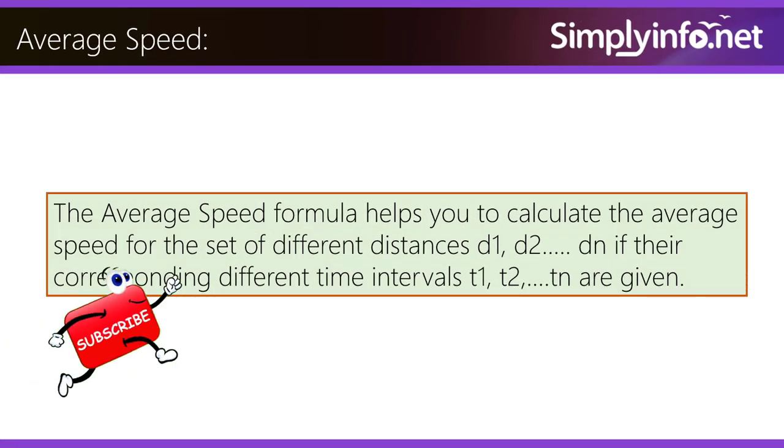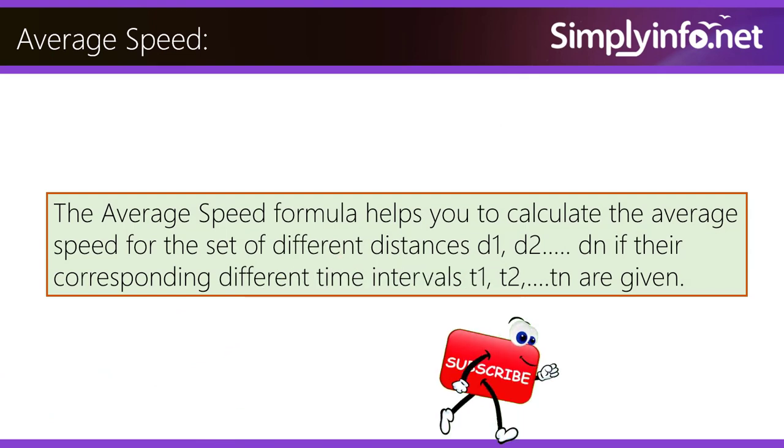The average speed formula helps you calculate the average speed for a set of different distances d1, d2 till dn, if their corresponding different time intervals t1, t2 till tn are given.